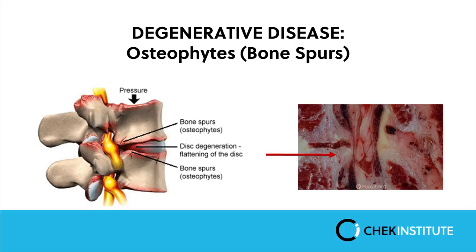Pain from facet joint disease may be felt down the center of the lower back and can spread into both buttocks. Sometimes it may spread into the thighs, but generally it doesn't go beyond the knees. This can also occur in conjunction with osteophytes or bone spurs, which involve a hypertrophy of the vertebral bodies adjacent to the degenerative disc.